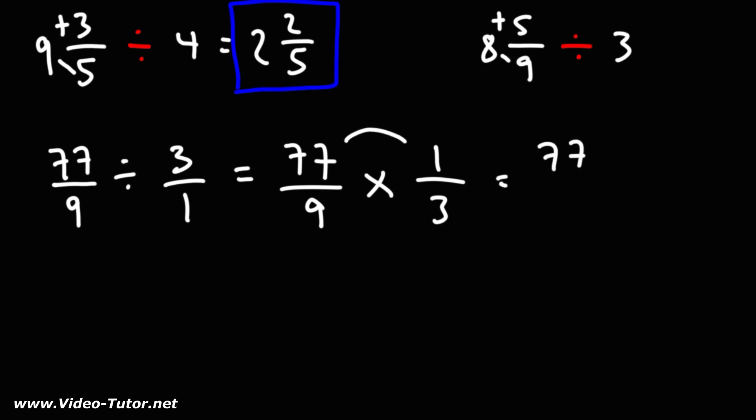77 times 1 is 77. 9 times 3 is 27. Now let's convert this improper fraction to a mixed number.